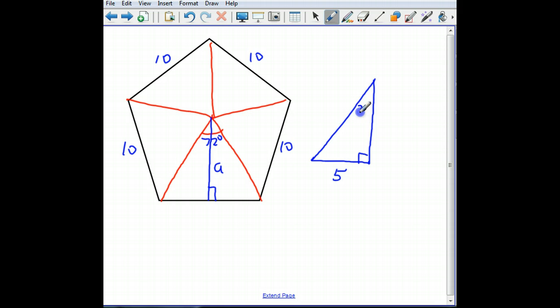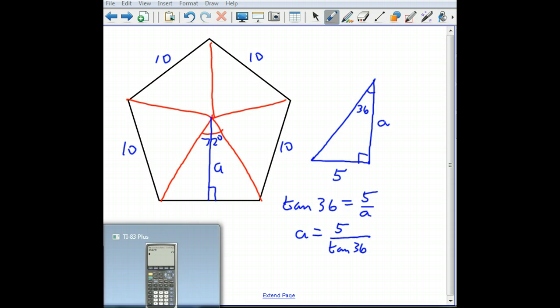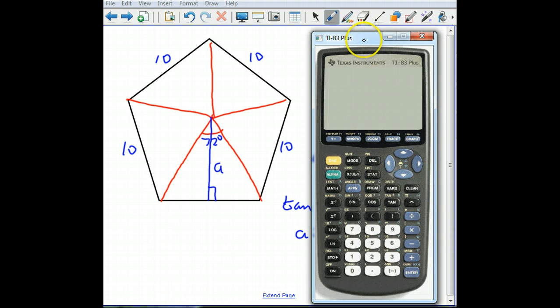This angle up here is 36. And I'm looking for the apothem. So if I'm standing at this angle up here, there's my opposite side, there's my adjacent side. The tangent of 36 is equal to opposite over adjacent. So my apothem is 5 divided by the tangent of 36.